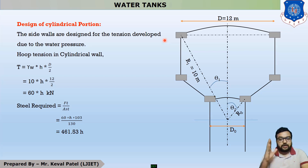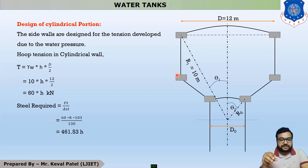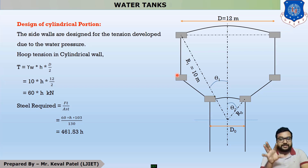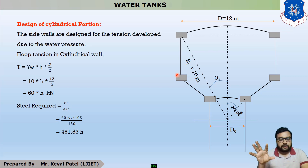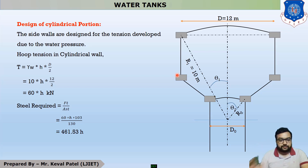Now let us start our third component design: the design of the cylindrical portion. This is the most important component from the GTU exam point of view. In 99% of GTU exams, there are mainly three components of the intze tank design: the first is the top dome (already covered), the second is the top ring beam (already covered), and now the third component is the design of the cylindrical portion, which is covered in today's session.